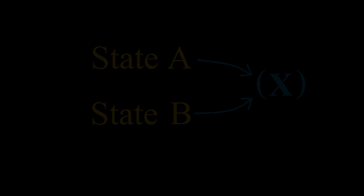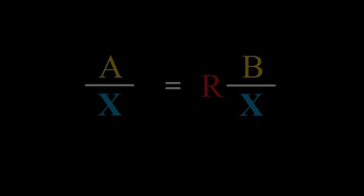In shorthand: A over X equals R times B over X, wherein A and B are the states, X is the standard, and R is the result. That is, R is the difference that would transform B back into A.